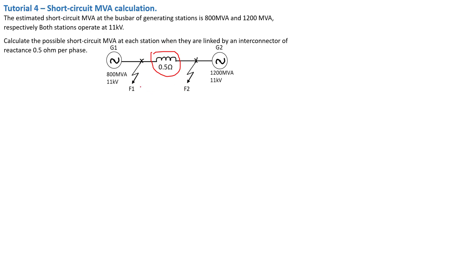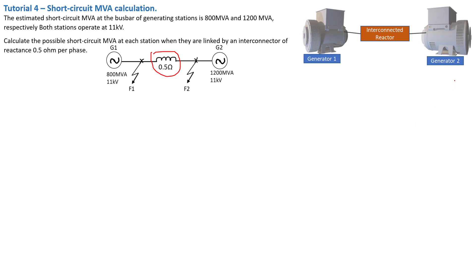Let's move on and find the fault at F1 and F2. Let's see the visual illustrations of our system. We've got generator 1 interconnected with generator 2 by a reactor that is limiting the short circuit current to a safe value. That reactor has an impedance of 0.5 ohm.